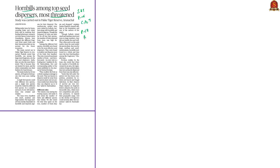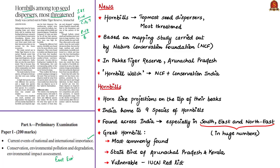Moving on to the second news article of the day, titled 'Hornbills Among Top Seed Dispersers, Most Threatened.' This article appears in the Science and Technology column, in page 15 in Chennai, Delhi and Thiruvananthapuram editions and in page 17 in Bengaluru edition. Its contents will be helpful in your prelims preparation under current events of national importance and general issues on environmental ecology. This article reports about a recent mapping study carried out by the Nature Conservation Foundation, conducted in Pakke Tiger Reserve, which found that hornbills are the topmost seed dispersers compared to other birds, and also the most threatened.